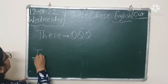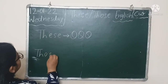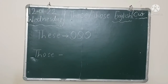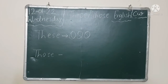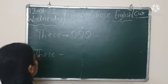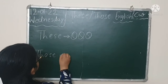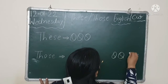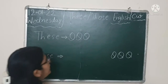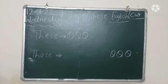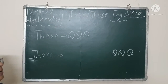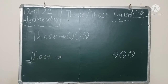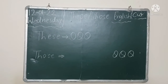And 'those' — we use 'those' when the objects are far from us. क्या होता है? वो हमसे दूर होता है. Far from us. जब भी कोई object हमसे दूर होता है. हम यह single के लिए use नहीं करते हैं.